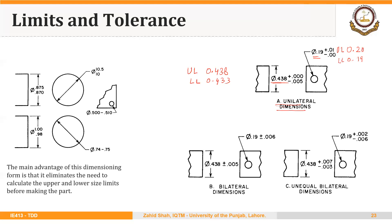In both cases we have unilateral dimensions or unilateral tolerance. Technically, the word tolerance means the difference between the upper limit and lower limit — the total variation allowed. So in the first case, the total variation allowed is 0.005, and that is the tolerance. Here the tolerance will be 0.01.